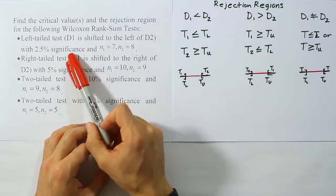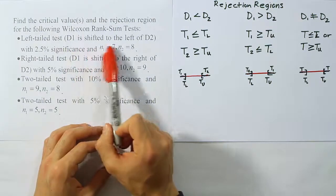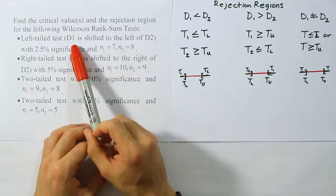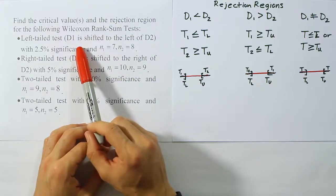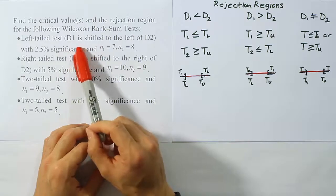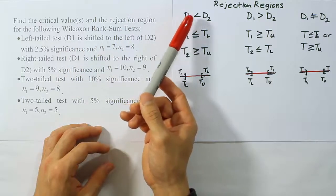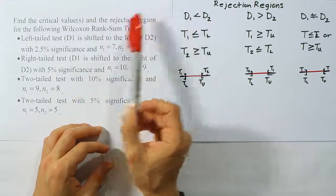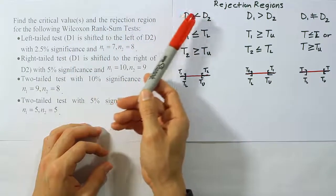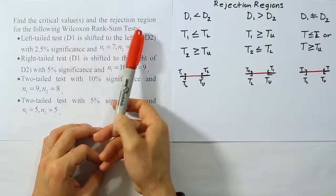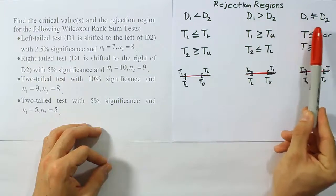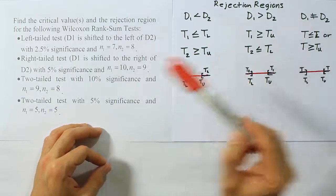I've given you a list of rejection regions based on the different tests. When it says D1 is shifted to the left of D2, it means the median for D1 is on the left-hand side of D2's median — the values would be lower. On the number line, left means smaller numbers, so D1 shifted left is equivalent to saying D1 is less than D2. Similarly, D1 shifted right means D1 is greater than D2, and a two-tailed case means they're simply not equal.